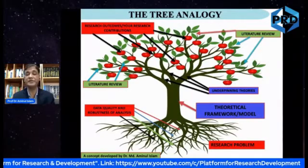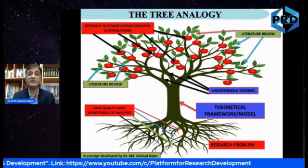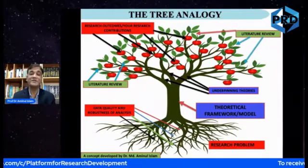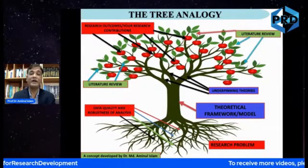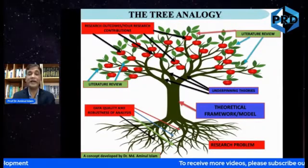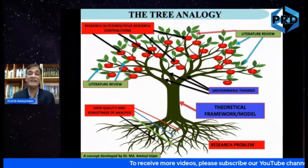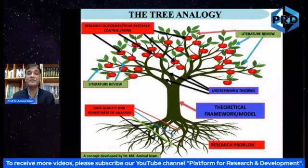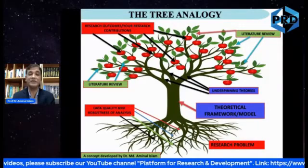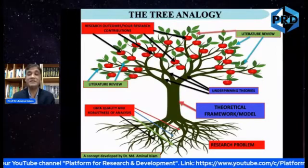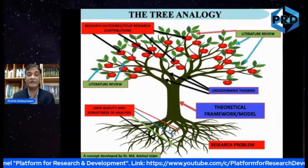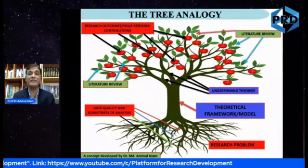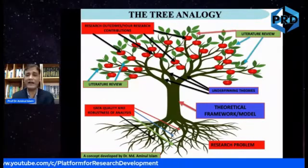Your contribution to research I compare with the fruits of a tree. The fruits tell you what you get from the tree, and a research outcome is like the fruit of the tree. If a tree has a problem at the root, you may not get the right kind of fruit. It is the same for research — if there is a problem in identifying and formulating the research problem, you will have a problem getting the right outcome.